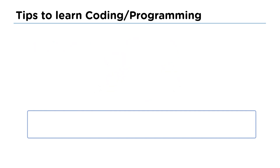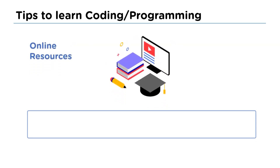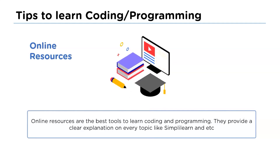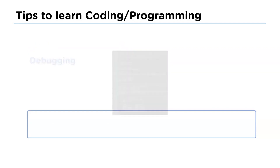The next tip is using online resources. One of the most accessible sources for learning programming or coding is online resources. There are plenty of platforms like Simply Learn that provide free courses and videos with great concepts. These platforms help much in learning, and Simply Learn in particular helps improve your coding skills.